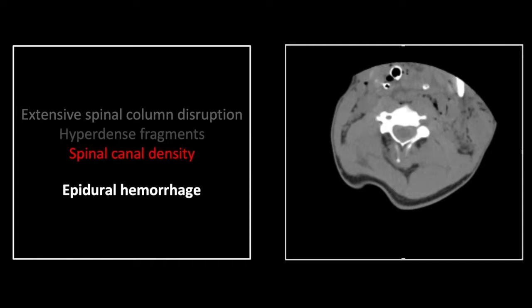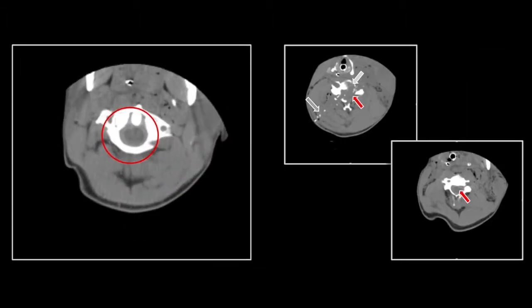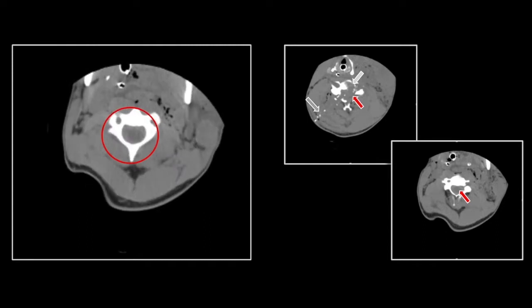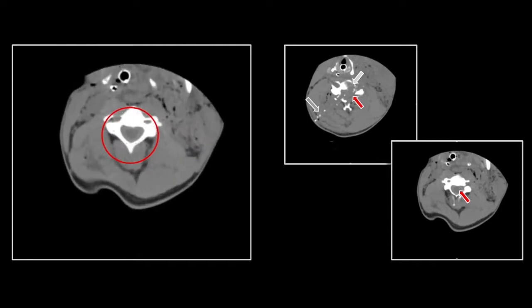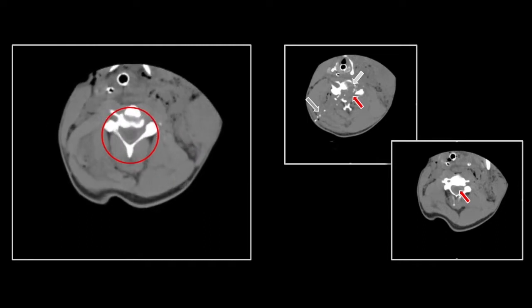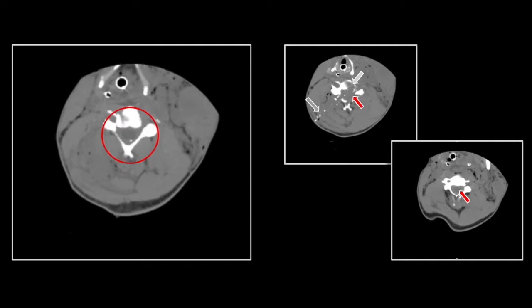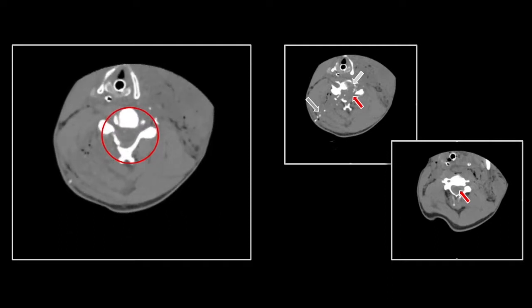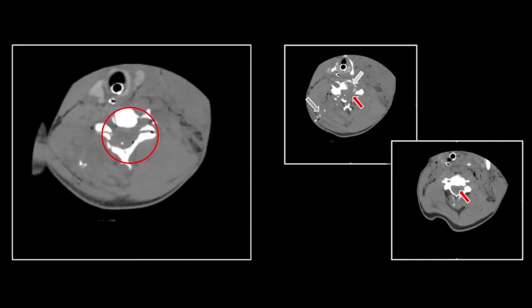Both above and below, it's important to appreciate spinal canal density consistent with epidural hemorrhage, extending well above and well below the level of trauma. Note the extent above and below the level of the injury itself.